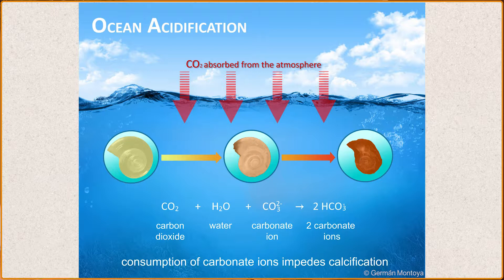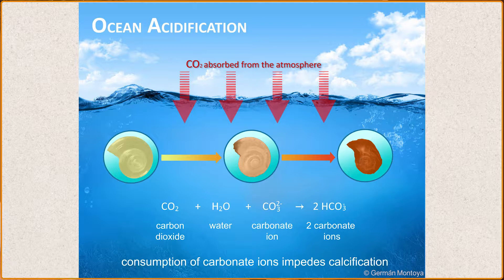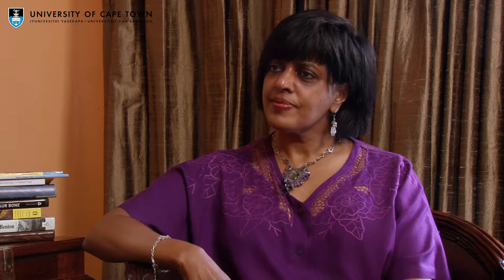It turns into carbonic acid and that affects a particular group of species called the calcifiers — species that need to lay down a hard exoskeleton, such as clams, mussels, and lobsters. They need carbonate ions to be able to do this, but with this change in chemistry, those ions are no longer available. That means they need more energy to lay down exoskeletons, and sometimes the exoskeletons are thinner and more fragile. The effects on those particular groups of species is large.